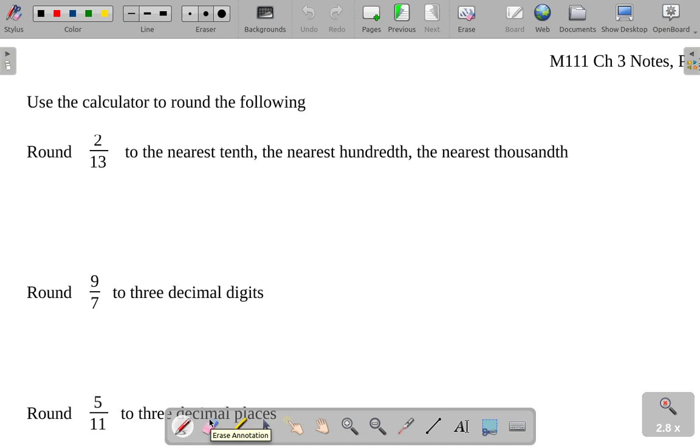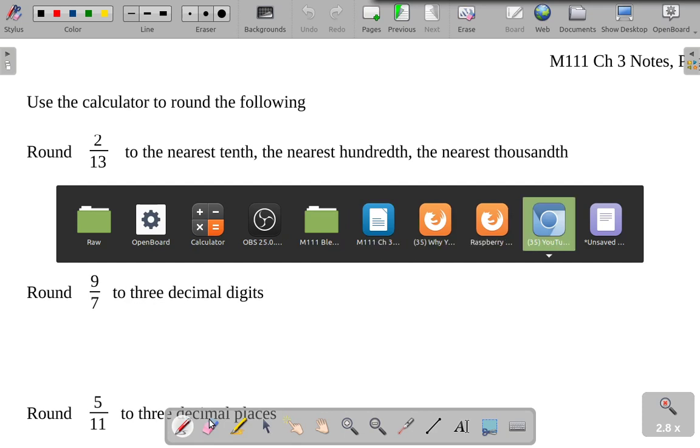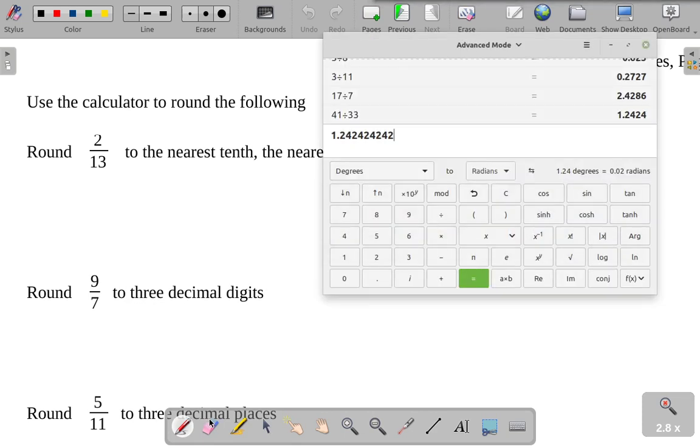All right, so kind of putting this together. Use the calculator to round the following. We want to look at 2 thirteenths, and we're going to round this to a couple of different places. I'm just using the calculator because it's a lot faster than doing these things by hand.